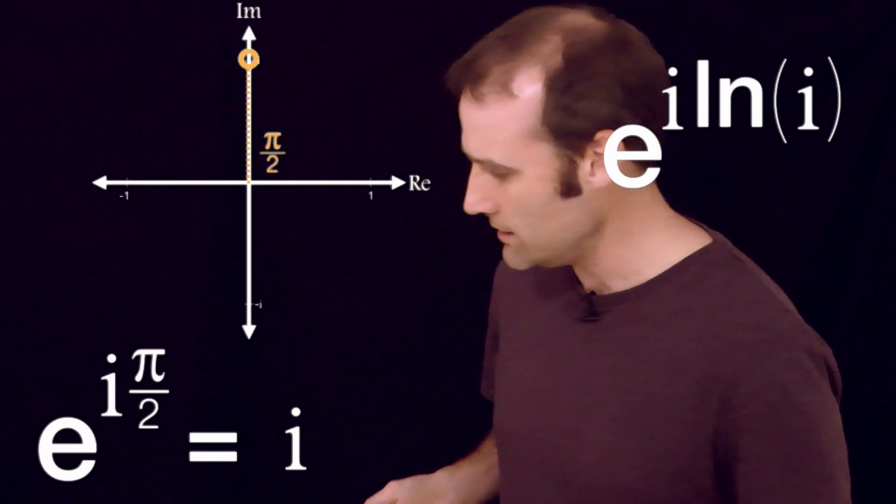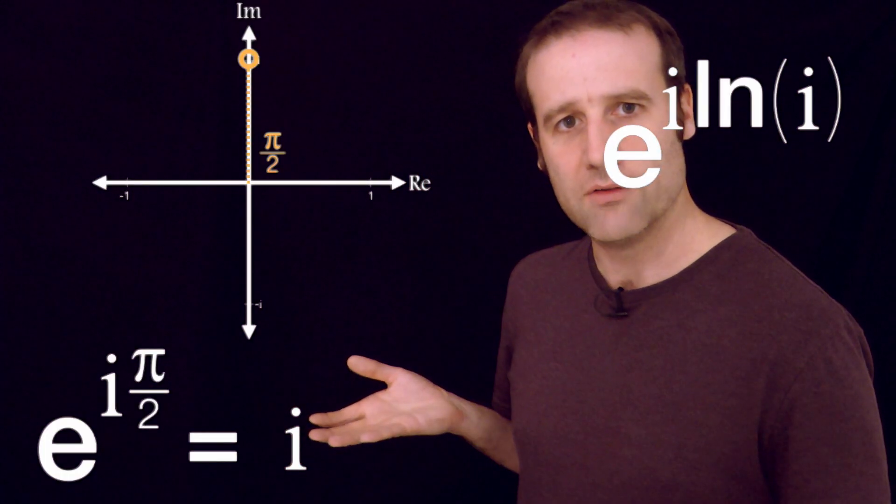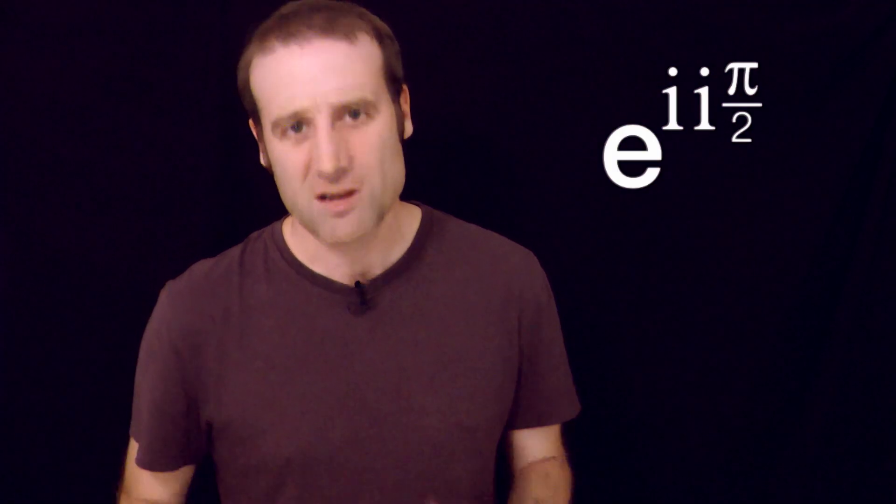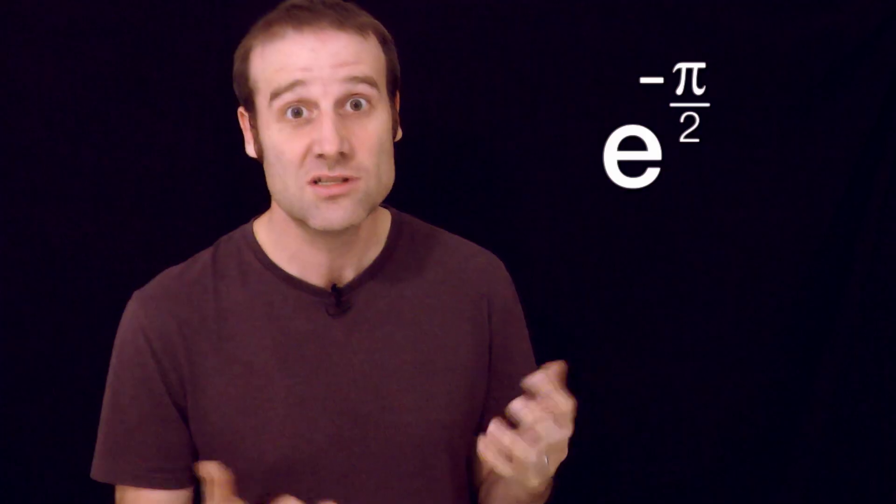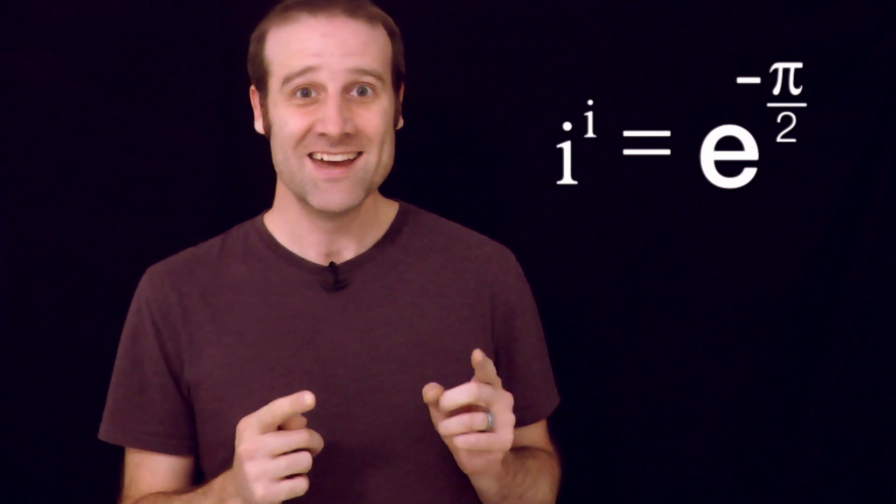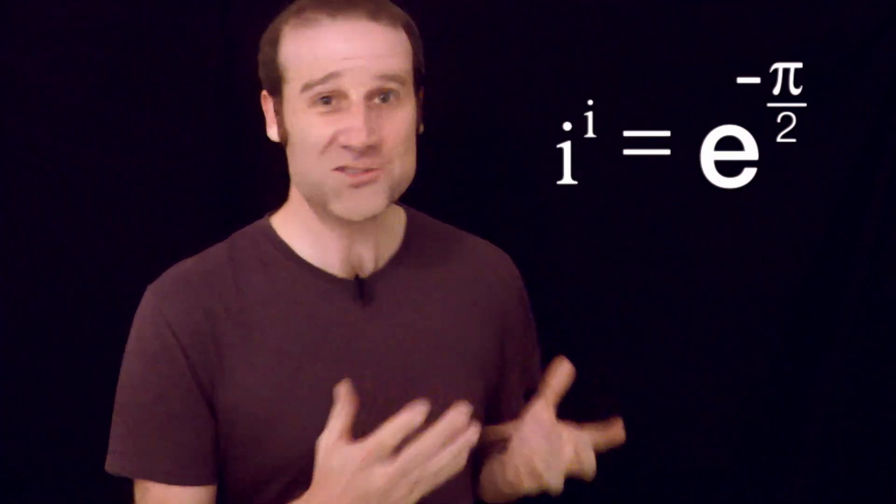So we take that and we pop it over in there. So the natural logarithm, we've got two i's next to each other. The imaginary number times the imaginary number is negative 1 by definition. So we swap that out for a negative. And there you have it. i to the power of i equals e to the negative pi on 2.